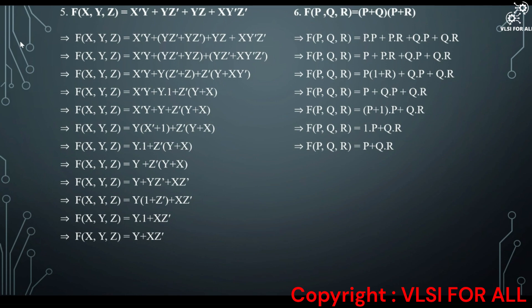Our next equation is F(p, q, r) = (p plus q)(p plus r). Using the distributive law: p·p plus p·r plus q·p plus q·r. Using the idempotent law, p·p = p, giving p plus p·r plus q·p plus q·r. Using the distributive law again: p(1 plus r) plus q·p plus q·r. Using the dominance law, 1 plus r = 1, giving p plus q·p plus q·r. Using the distributive law: p(1 plus q) plus q·r. By dominance law, 1·p plus q·r, so the reduced form is p plus q·r.